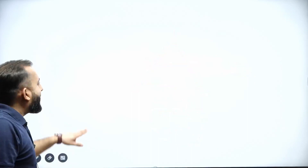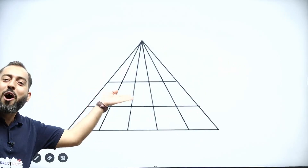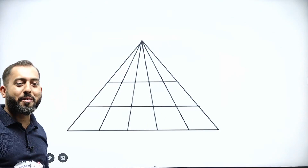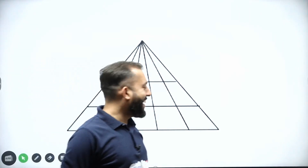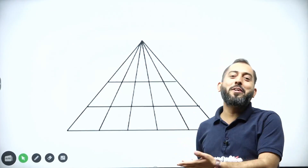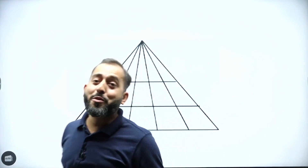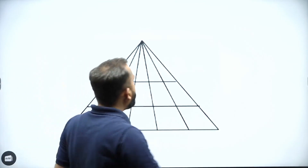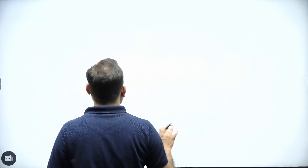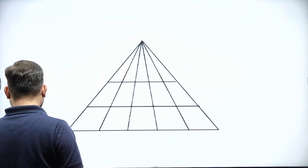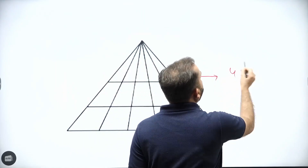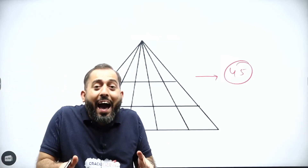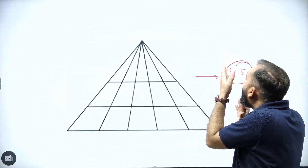But what the examiner is going to do in the paper is ask you this: how many triangles are there in this figure? You got stuck, right? Because there are a lot of points to mark. You can't count them down manually. Frankly, there are 45 triangles in this figure.